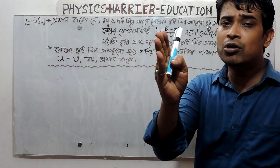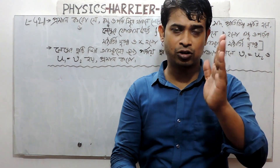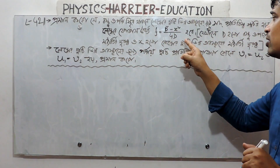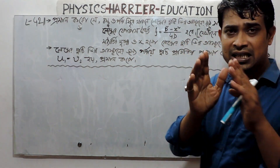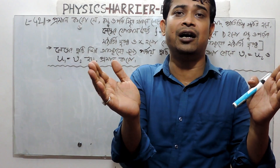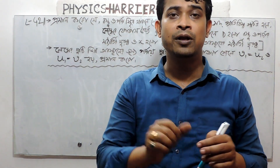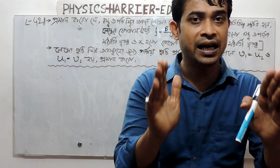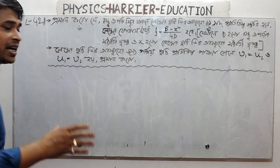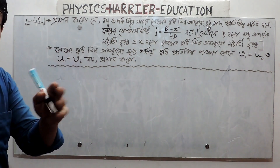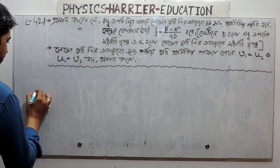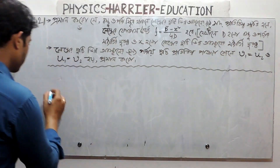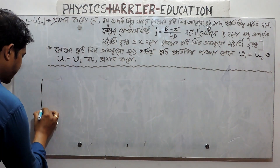If d is a physicality of d square minus x square by 4d. If you want to make a diagram, you can make a diagram with a general figure. Suppose you want to make a lens.